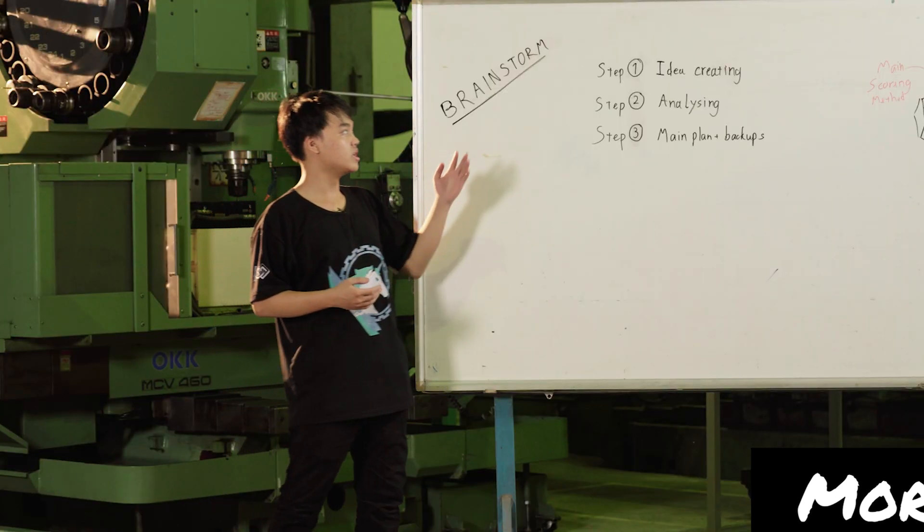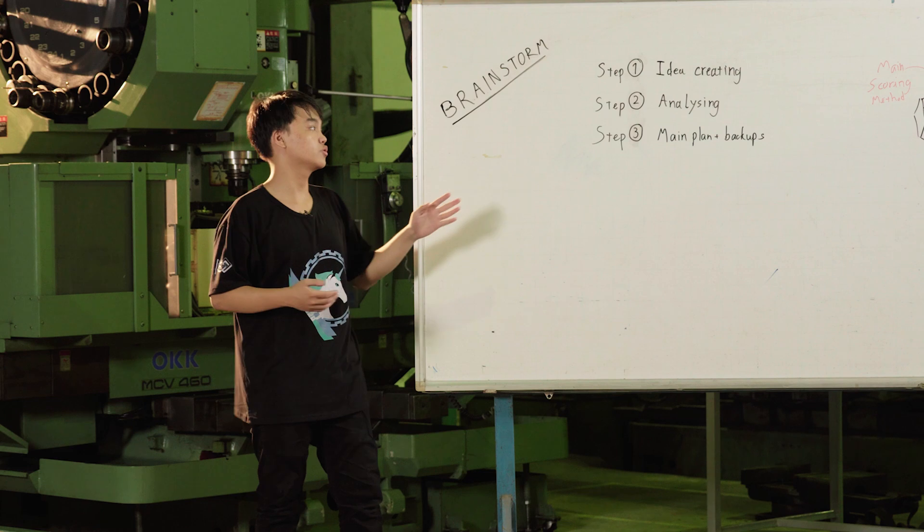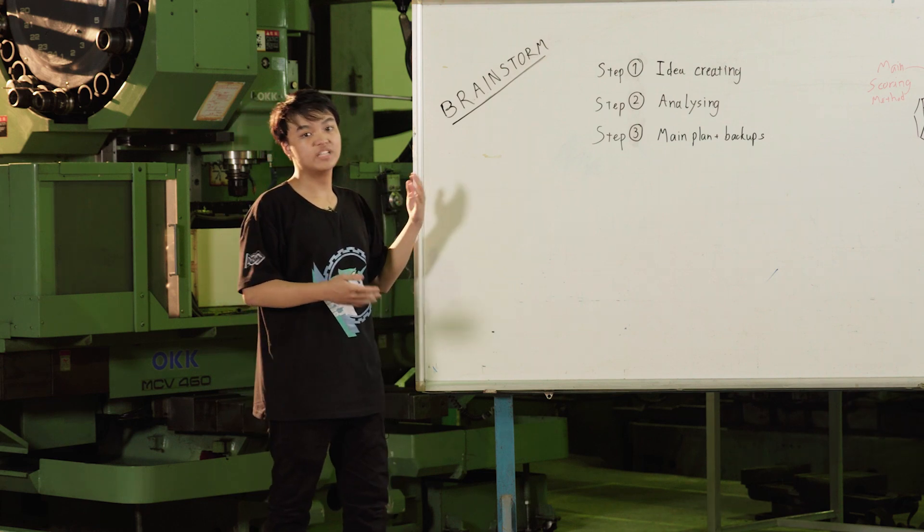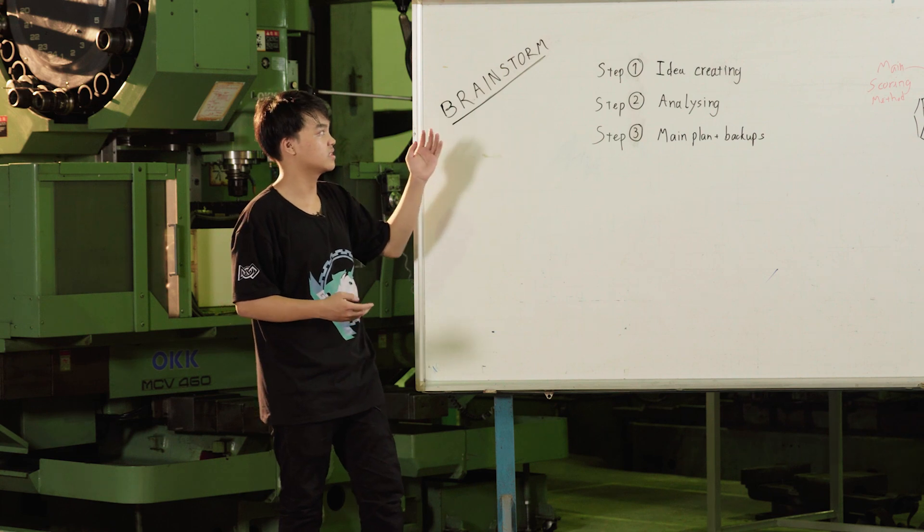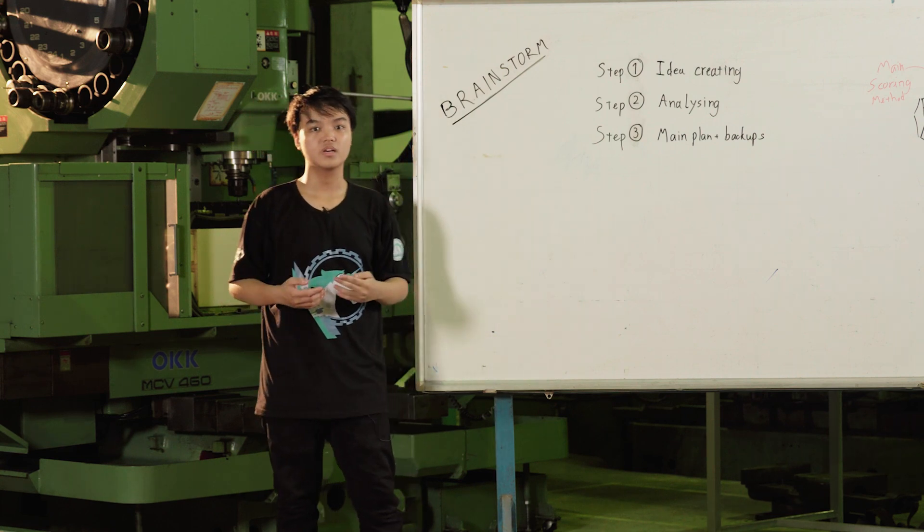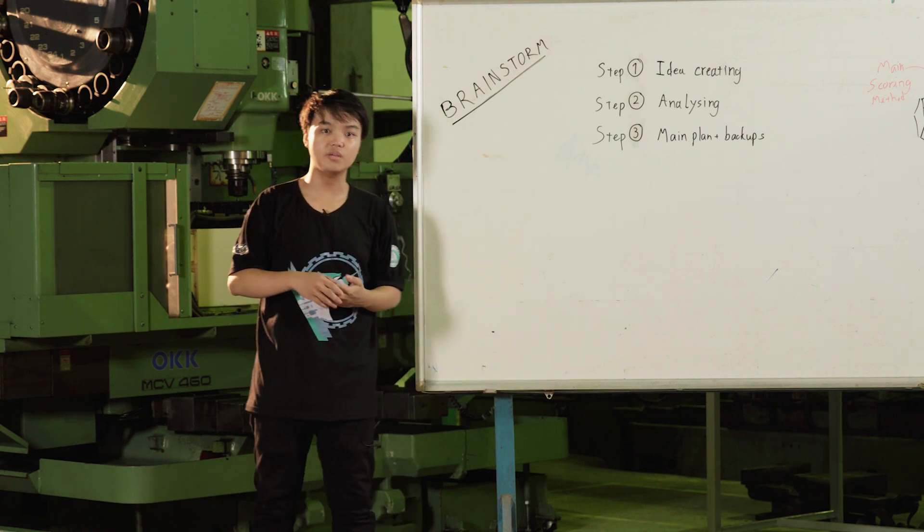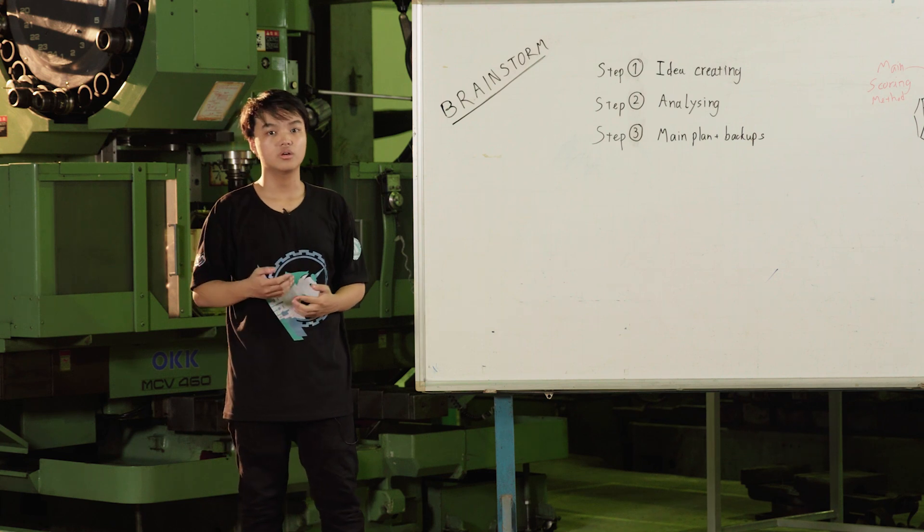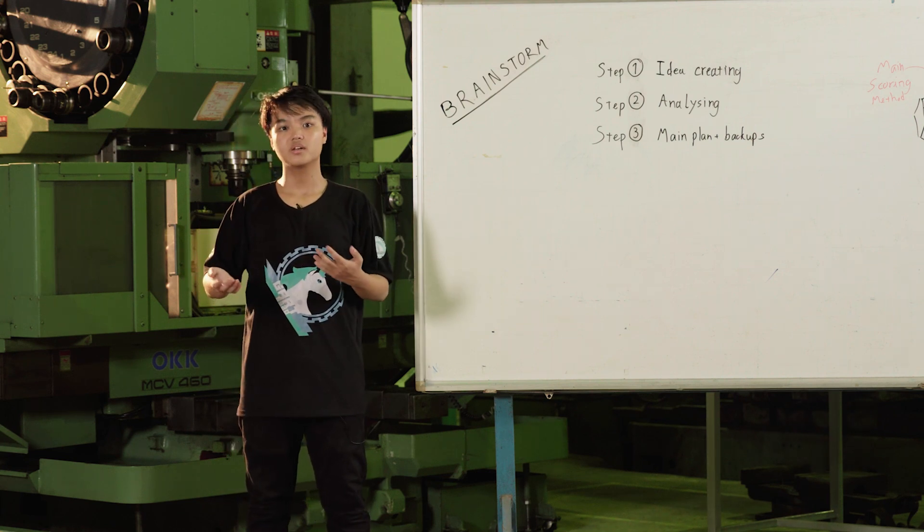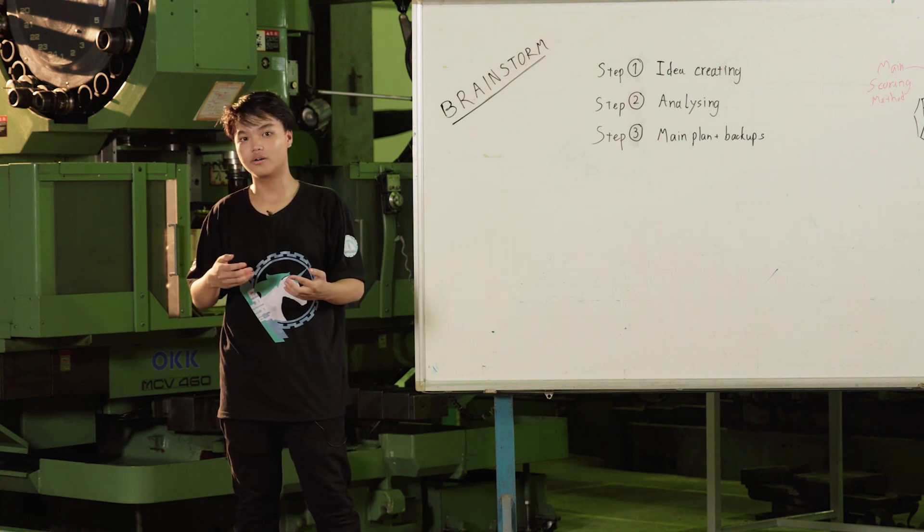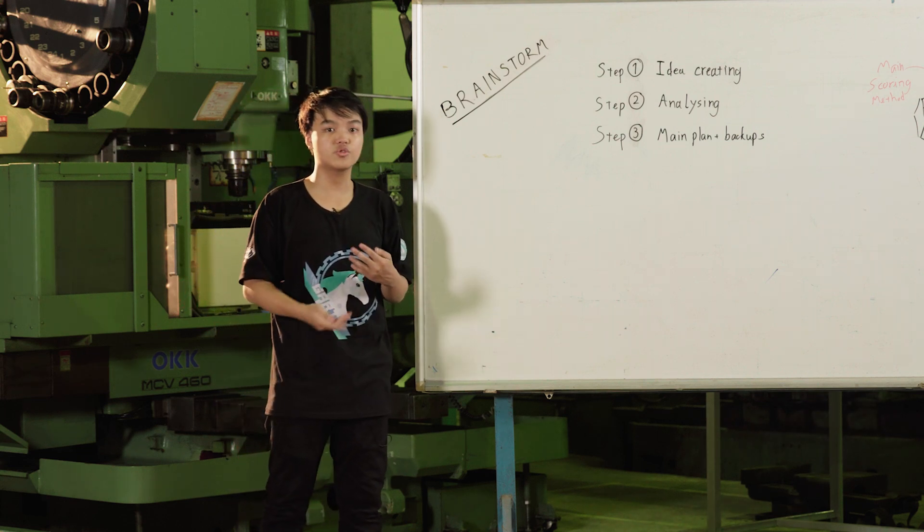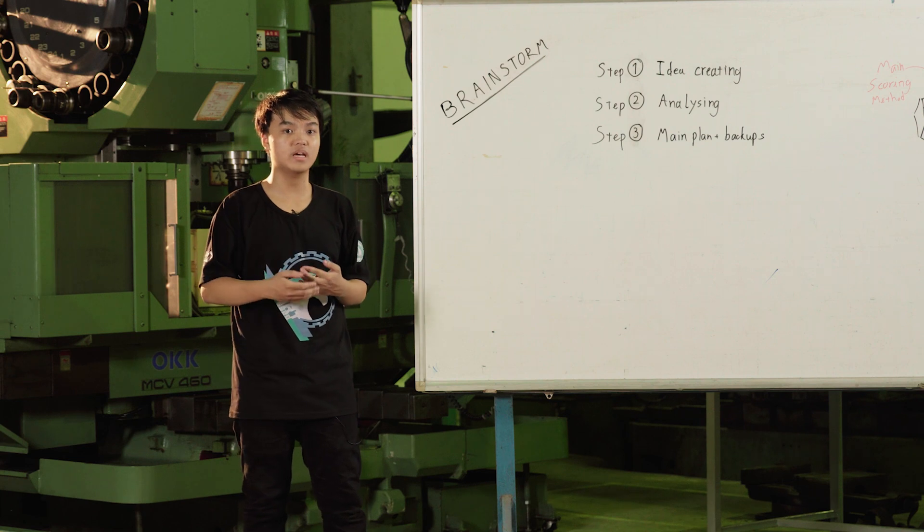There are three different steps for you to efficiently brainstorm for your robots. The first step is the idea creating step. In this step, every member of the team should take part in researching and coming up with their own ideas. Later on, I will bring some friends to show you how we actually do it.